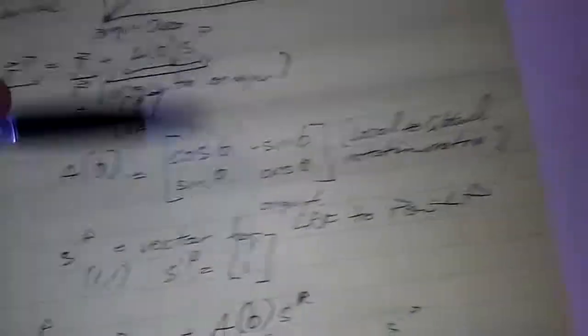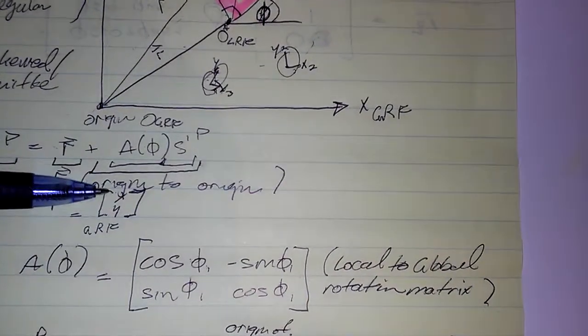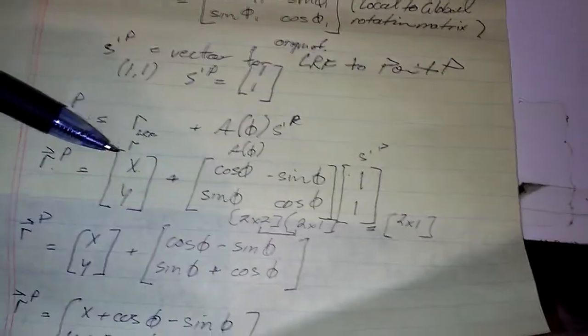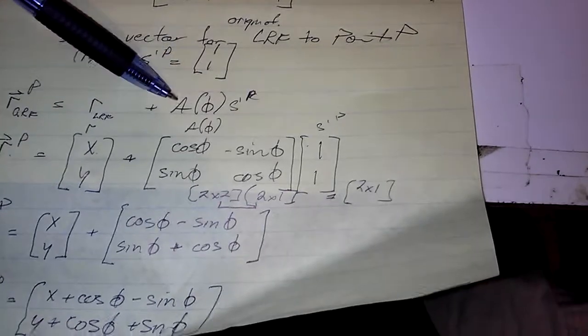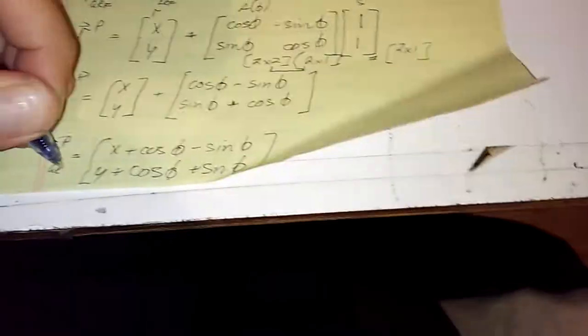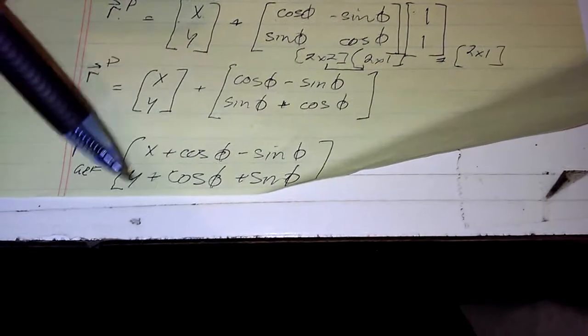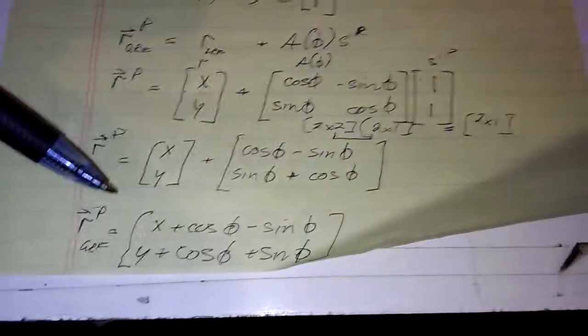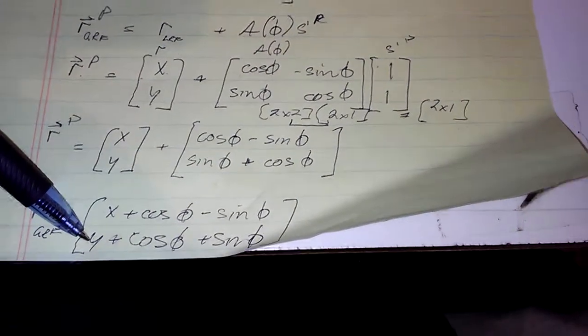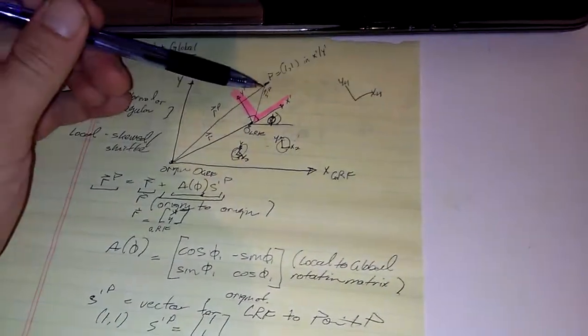So, we have the A matrix. The R matrix is x, y. We're not worried so much about how to get to x, y initially, because we're making constraints so we can solve the problem. We have the rotation matrix. We have s prime of p, which is how to get to p in the local frame. We take R plus the product of A of phi times s prime of p, which is this plus this times this, which gives us this plus this, which gives us R of p in the global reference frame. Of x plus cosine phi minus sine phi and y plus cosine phi plus sine phi.